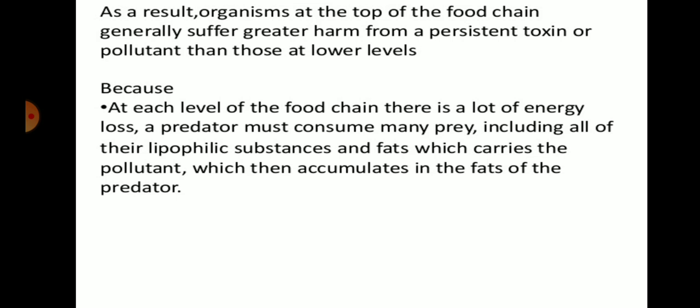Each food chain contains producers and consumers — primary, secondary, and tertiary consumers. At each level there is a lot of energy loss, so predators must consume many prey. This includes consuming all their lipophilic substances and fats, which carry the pollutant, which then accumulates in the fats of the predators. Because predators must recover energy loss by feeding on more prey, they accumulate more pollutant in their bodies through the lipids and lipophilic substances of prey.